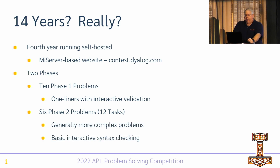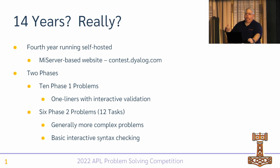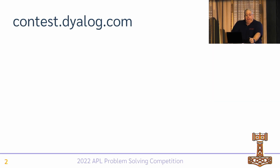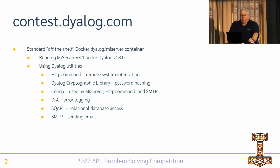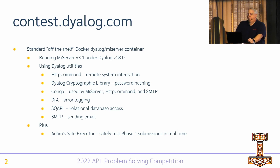These are generally more complex problems. One thing we added this year was some basic interactive syntax checking, so when somebody uploaded a phase two solution, we would scan it and make sure there were functions of the appropriate valence. This way, if they got something wrong — misspelled name or wrong valence — we could give them immediate feedback. Contest.dyalog.com runs MyServer 3.1 under Dyalog 18.0, uses HTTP command, the cryptographic library, Conga, and Adam's safe executor, which allows us to execute APL expressions in a safe sandbox.